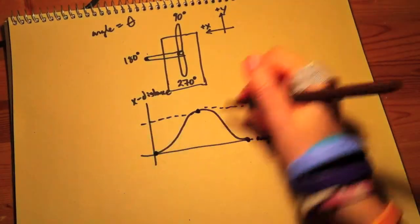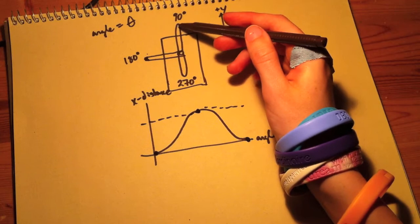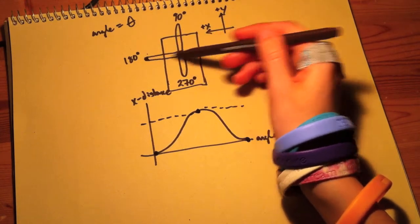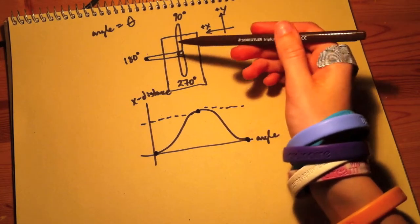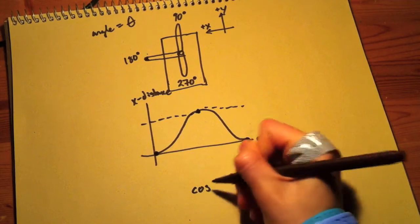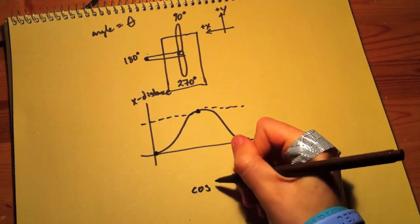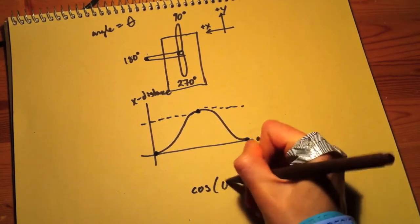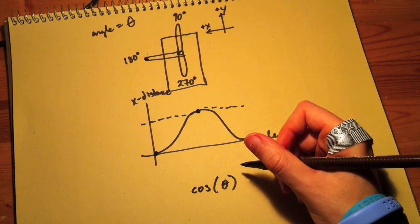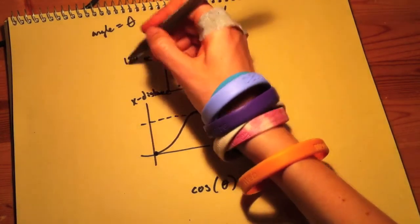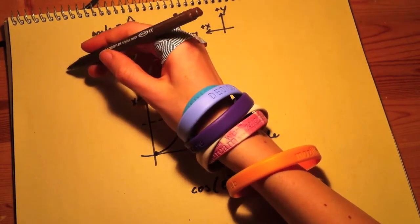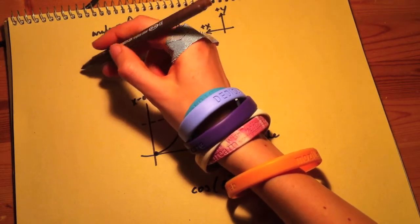We can start off with figuring out what the distance is of the servo arm from the center point. And that would just be the cosine of the angle since we only want the x component. So we take the cosine theta. And we also want to be able to add on whatever popsicle stick length is attached to the servo arm.